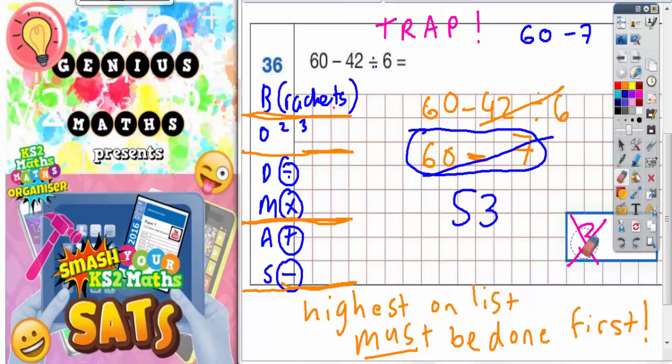The final answer should not be 3. It should be 53. But as I said, there is a very large trap waiting to happen if we forget about BODMAS.